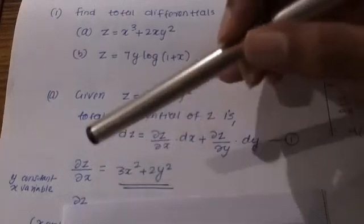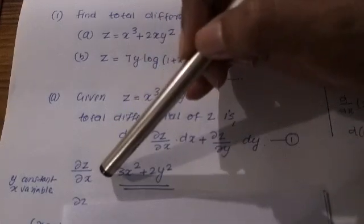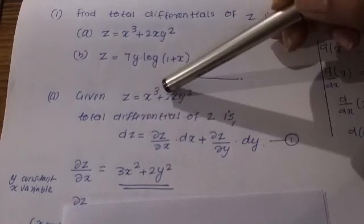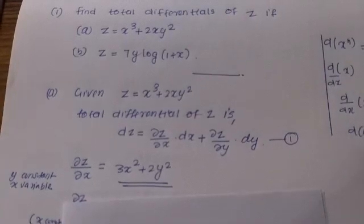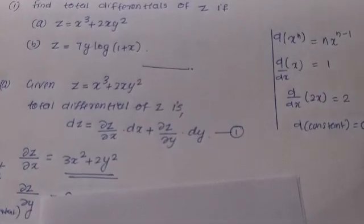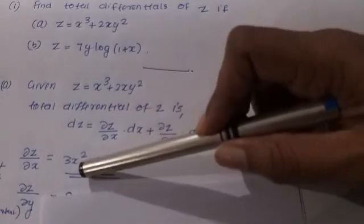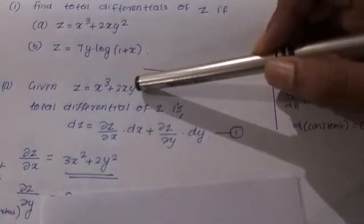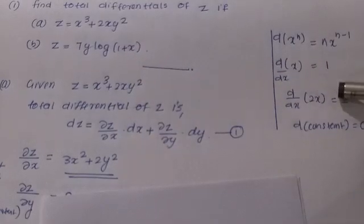For ∂z/∂x, x is the variable and y is constant. The derivative of x³ gives 3x², using the rule d/dx(xⁿ) = nxⁿ⁻¹. Since y is constant, 2y² is constant, and the derivative of x is 1, so we get 3x² + 2y².